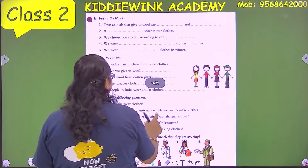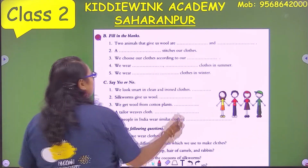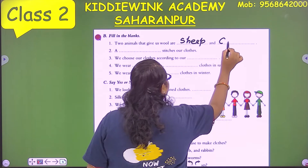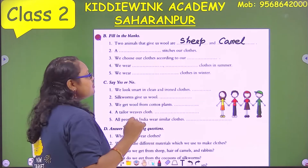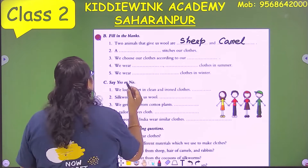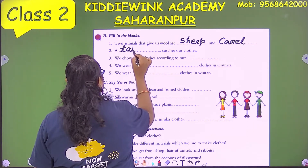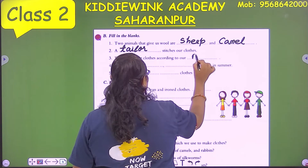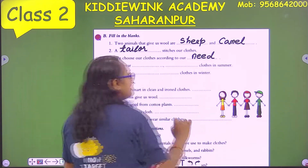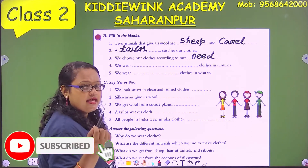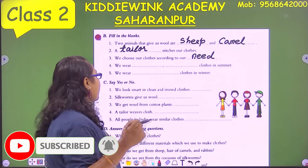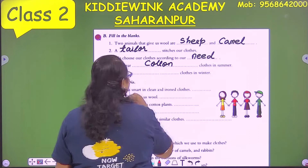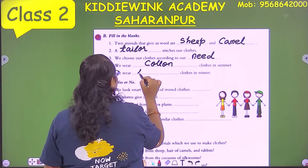Fill in the blanks. Two animals that give us wool: sheep and camel. A tailor stitches our clothes. We choose our clothes according to our need — we wear school dress for school and party dress for parties. We wear cotton clothes in summer and woolen clothes in winter.